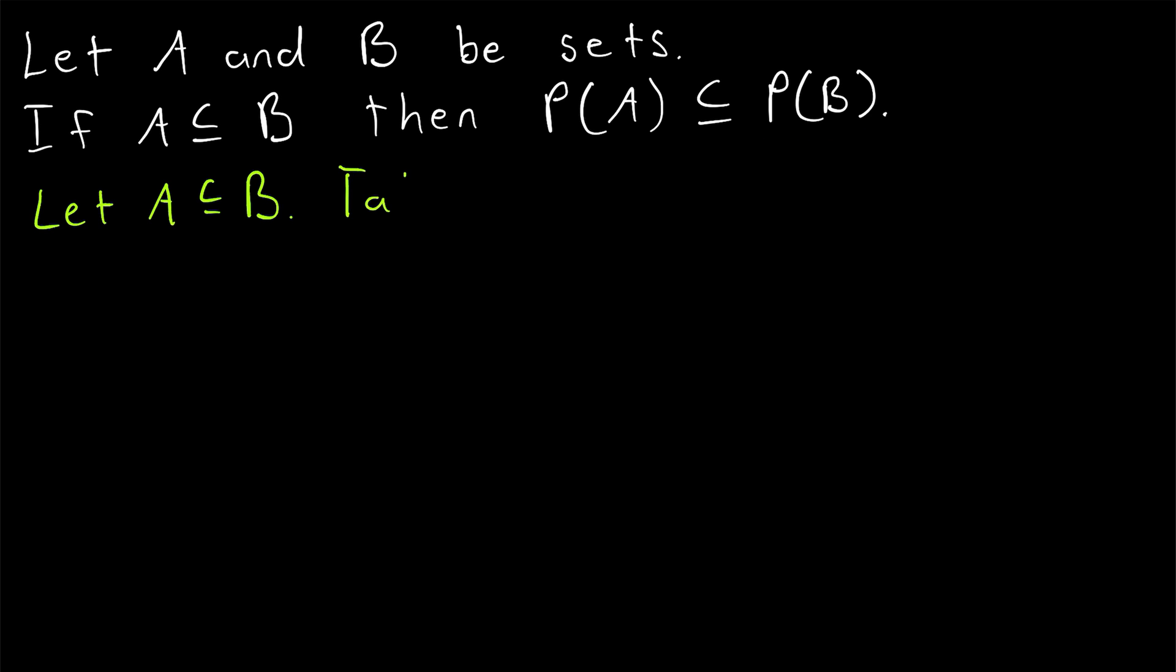Let's begin by taking an arbitrary element X from the power set of A. To show that the power set of A is a subset of the power set of B, all we need to do is show that every element of the power set of A is an element of the power set of B.